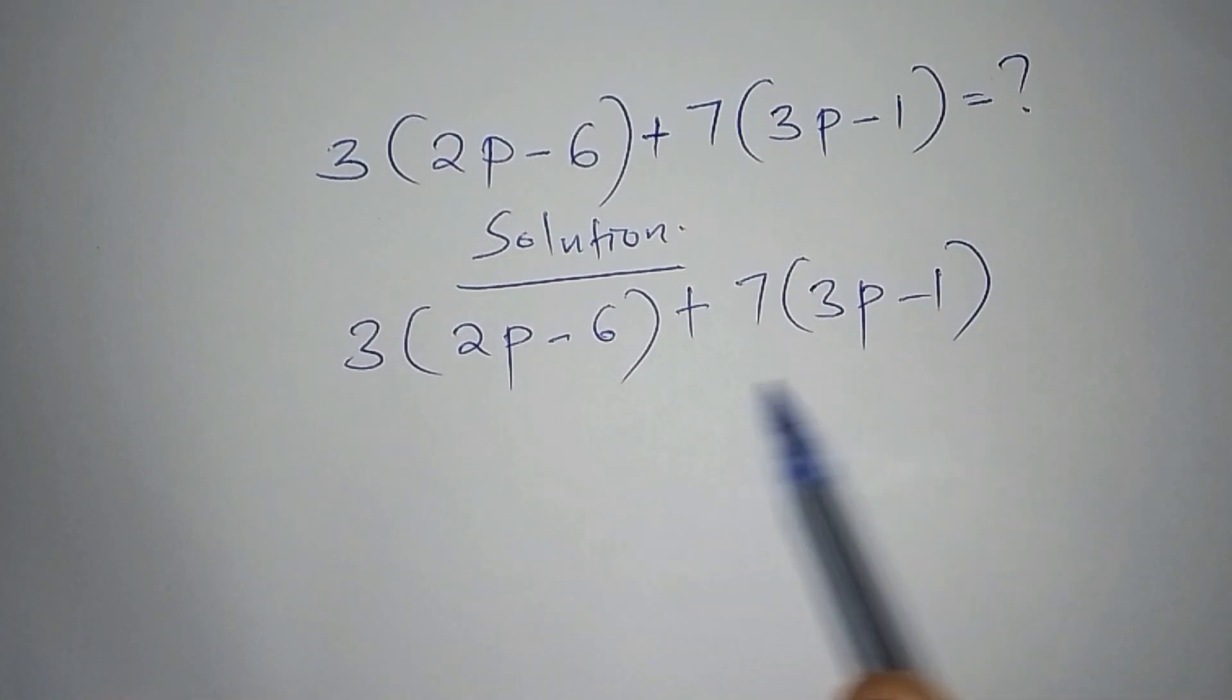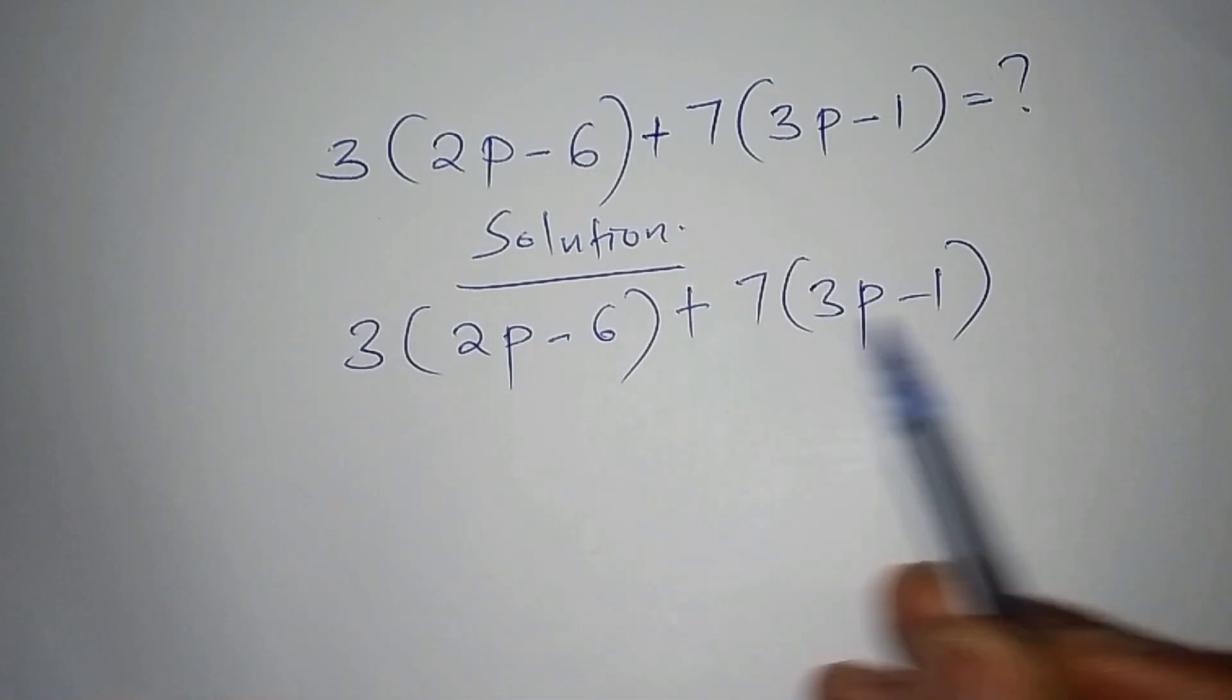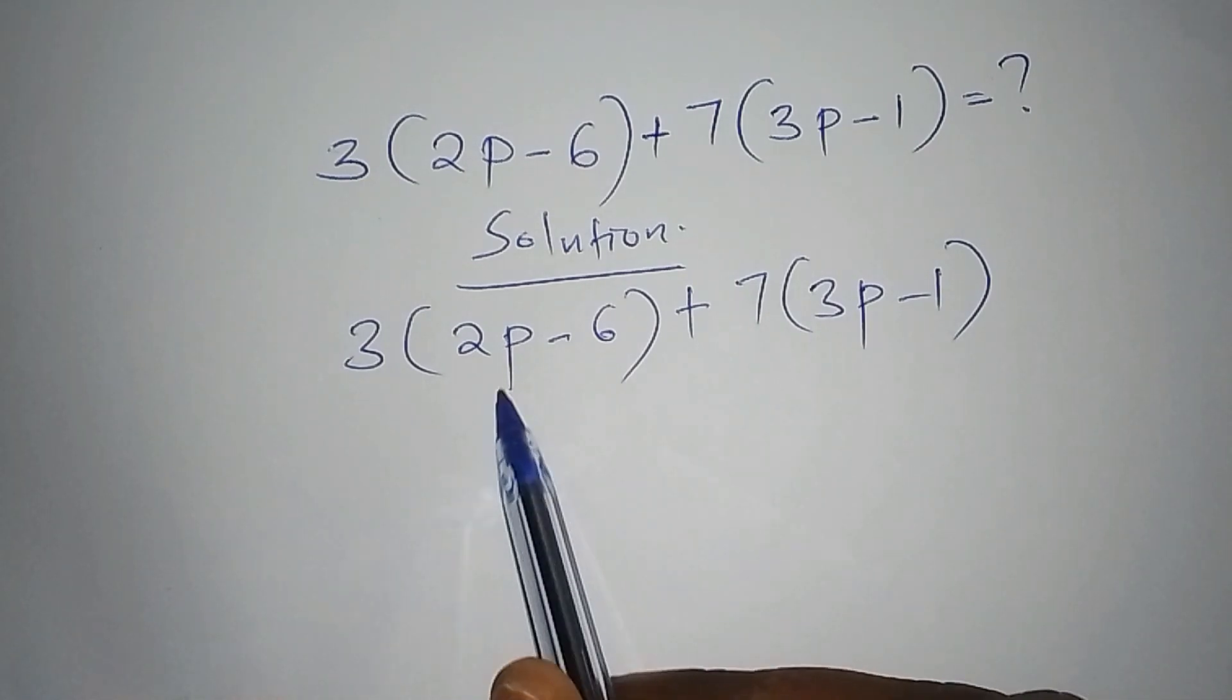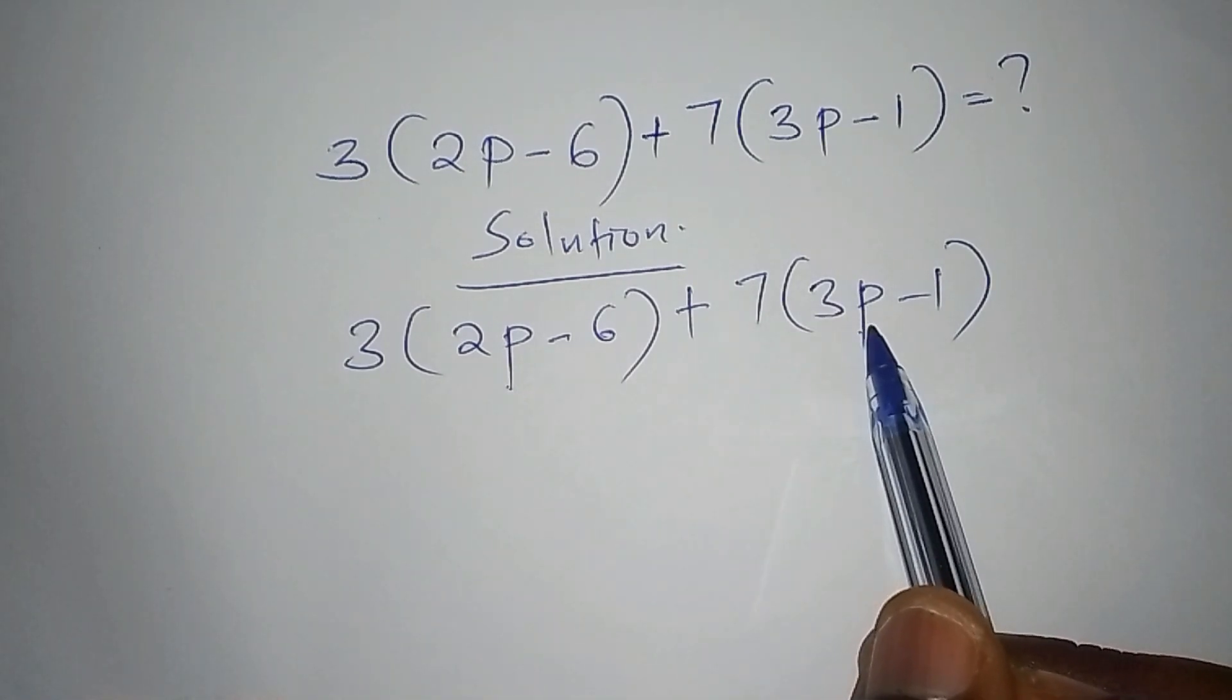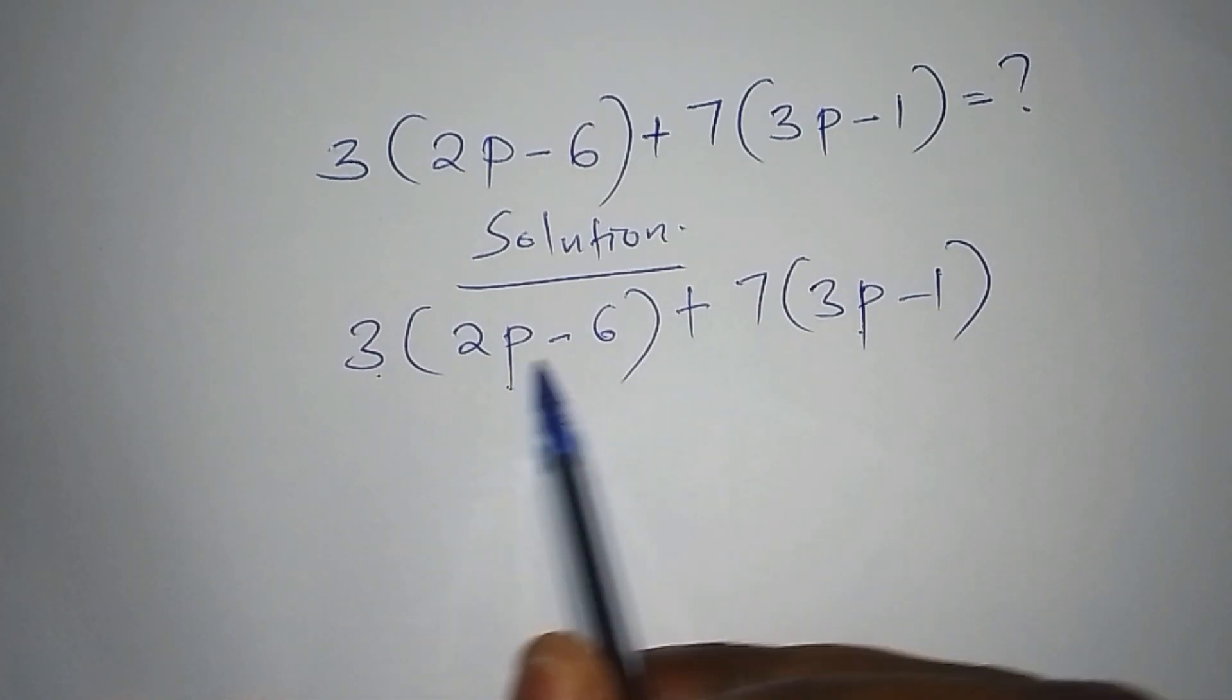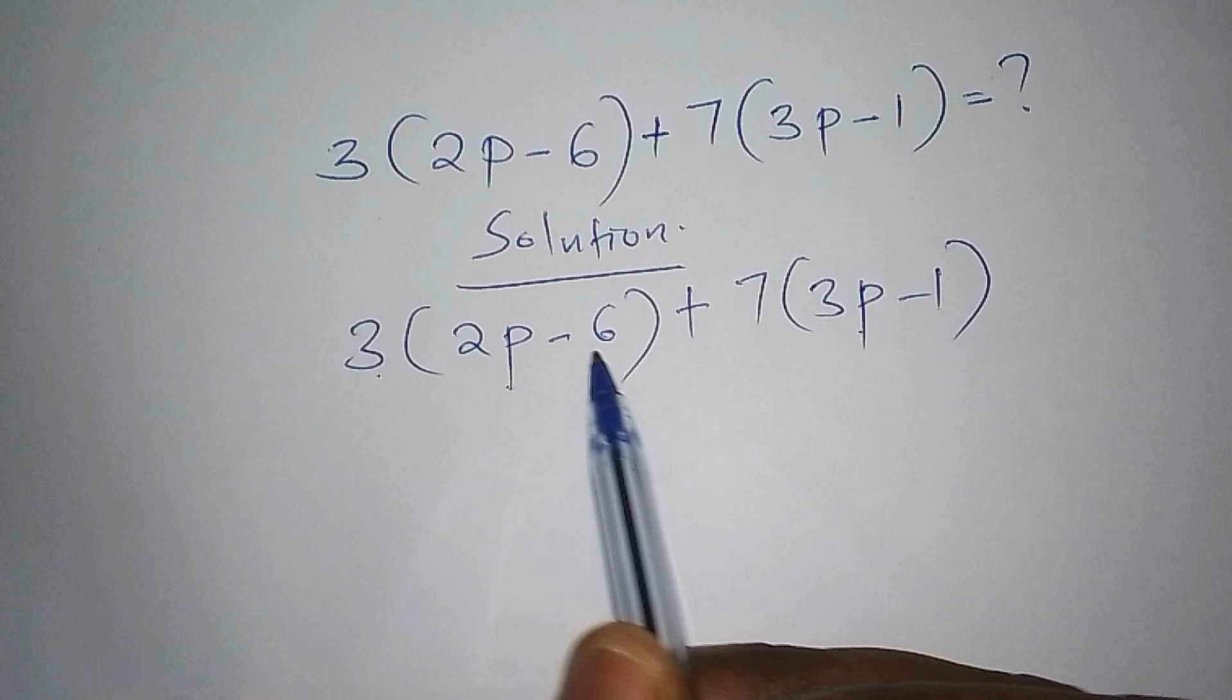The first thing that we're going to do in this algebraic expression, we have the known and we also have the unknown. For example, we know p and p, but the unknowns are like 3, 6, 7, 1. Those ones are the unknowns. What we need to do first is to open the bracket.